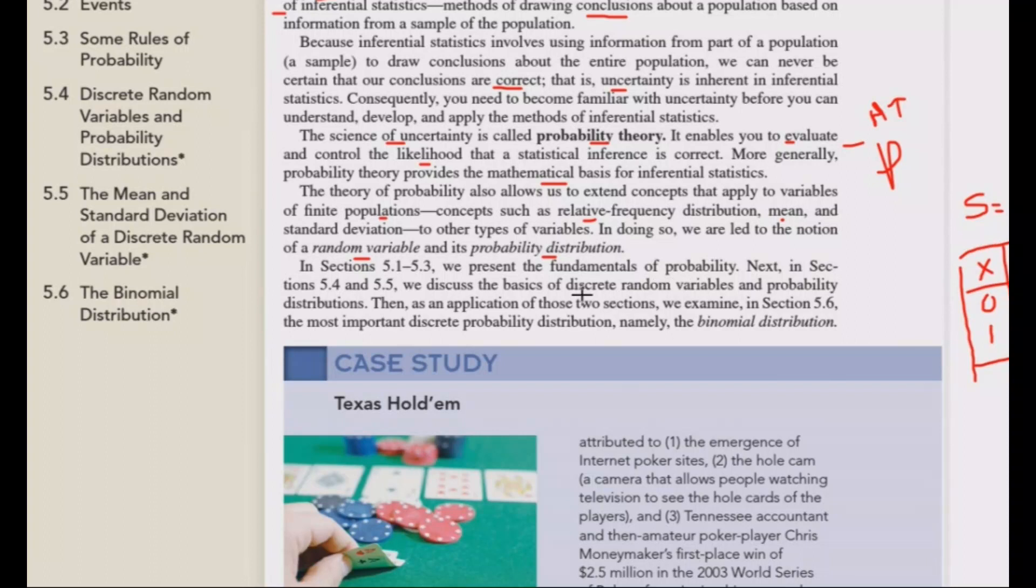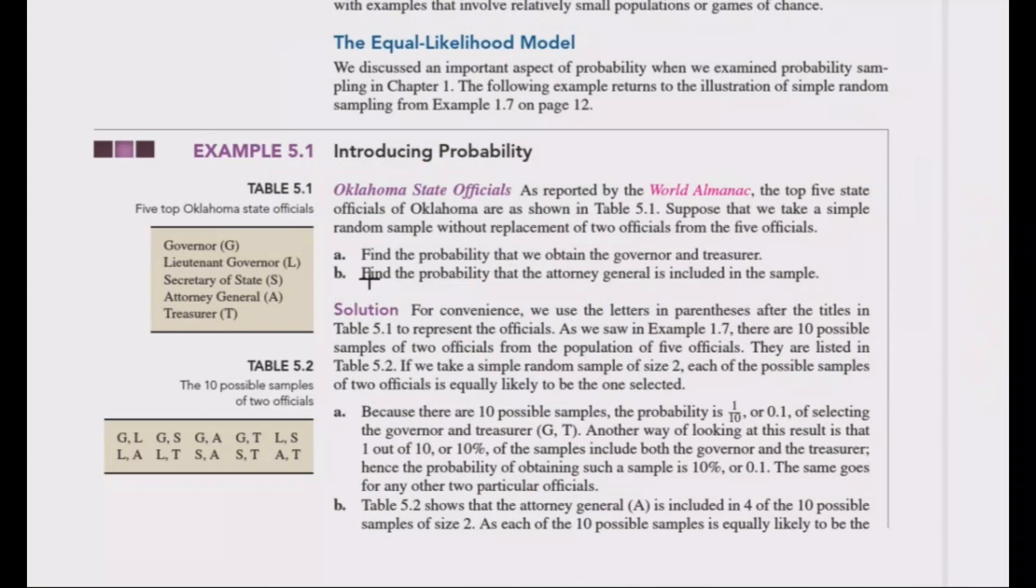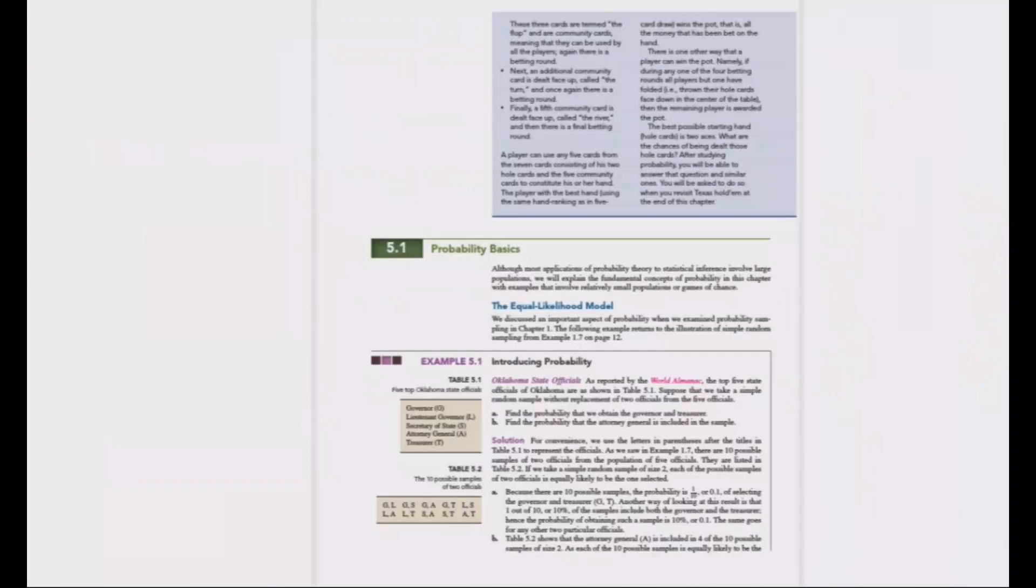There are two types of random variables: discrete random variables and continuous random variables. With discrete probability distributions, we have distributions like the binomial distribution. Continuous probability distributions include the normal distribution.